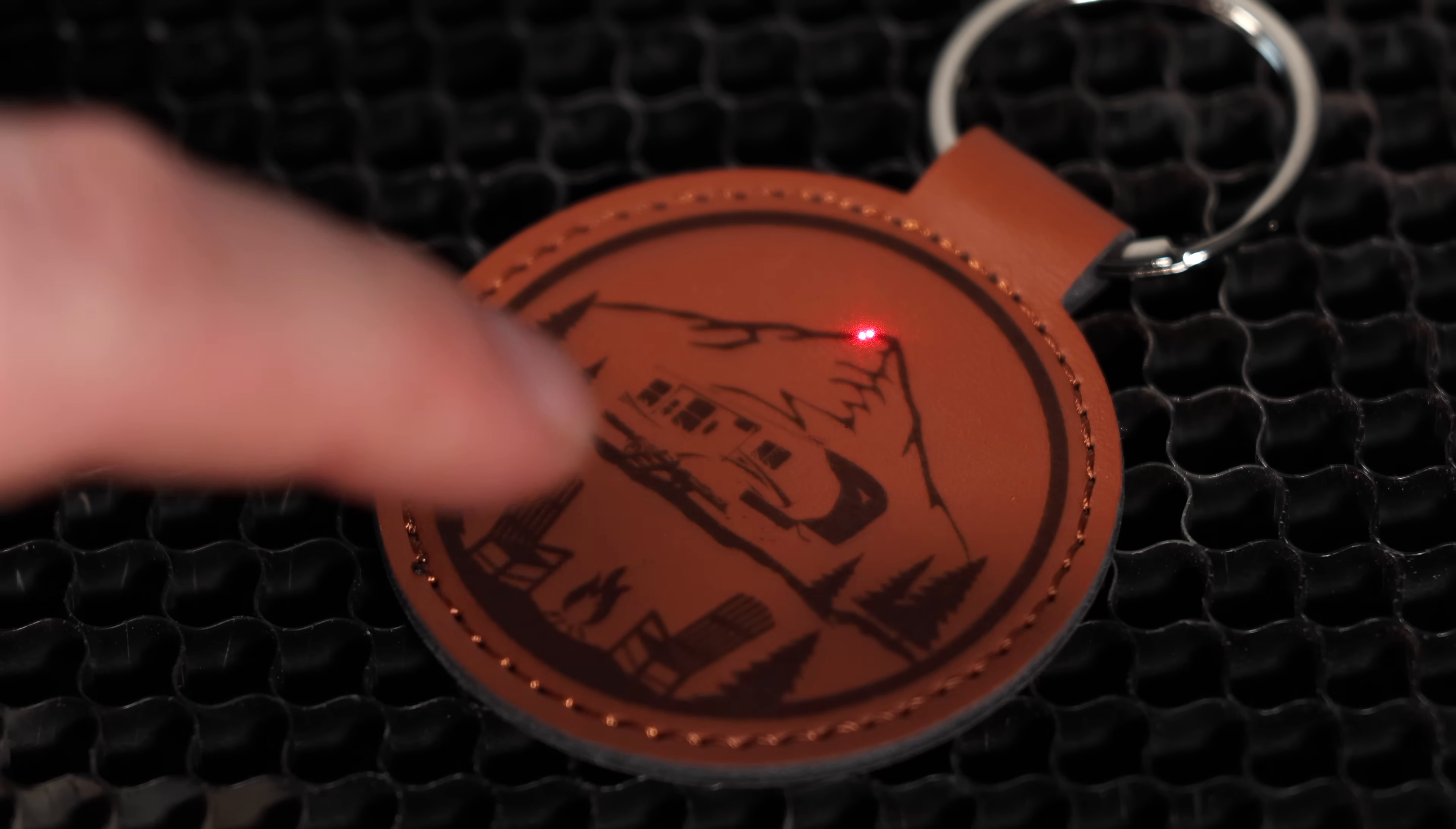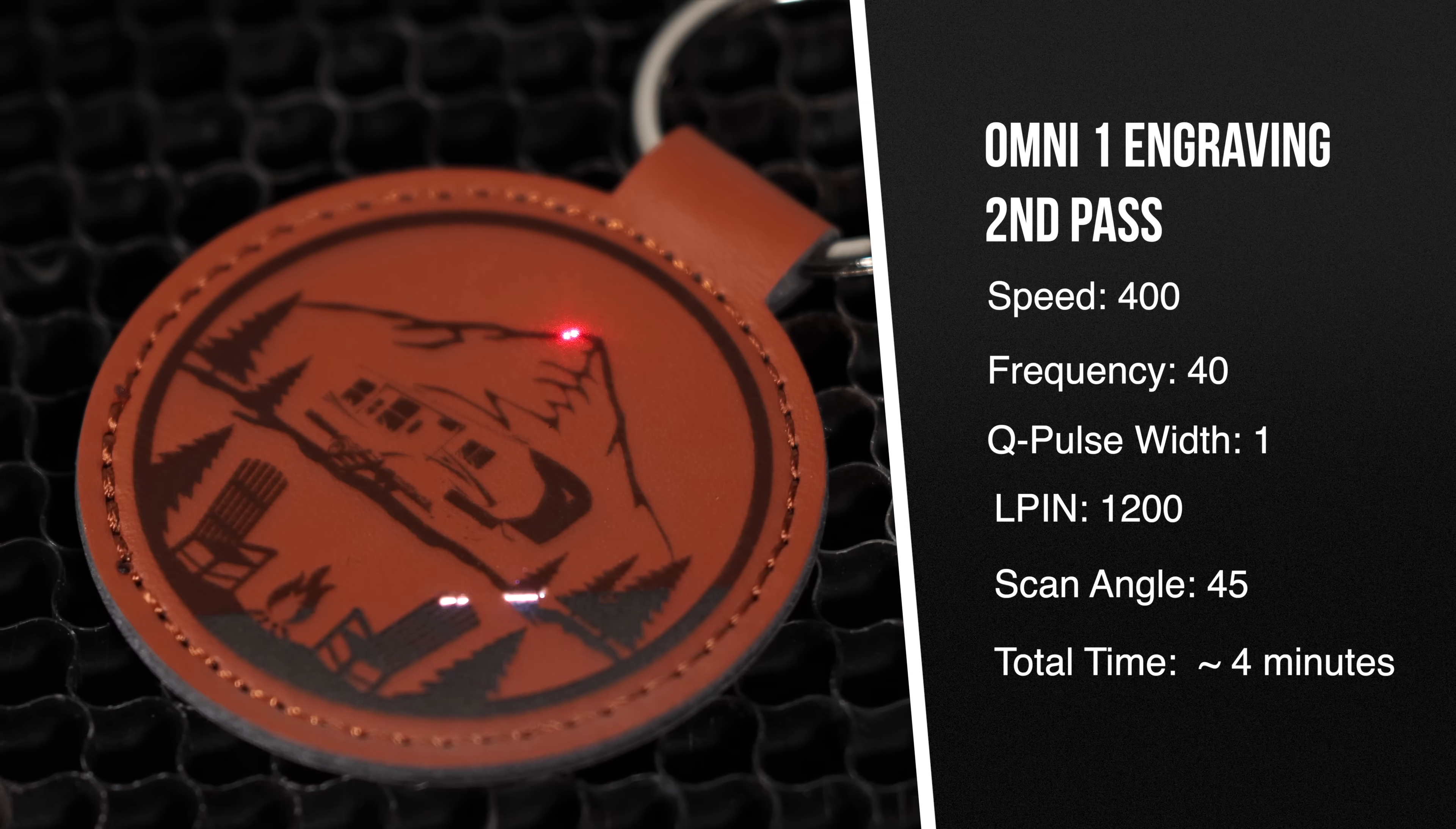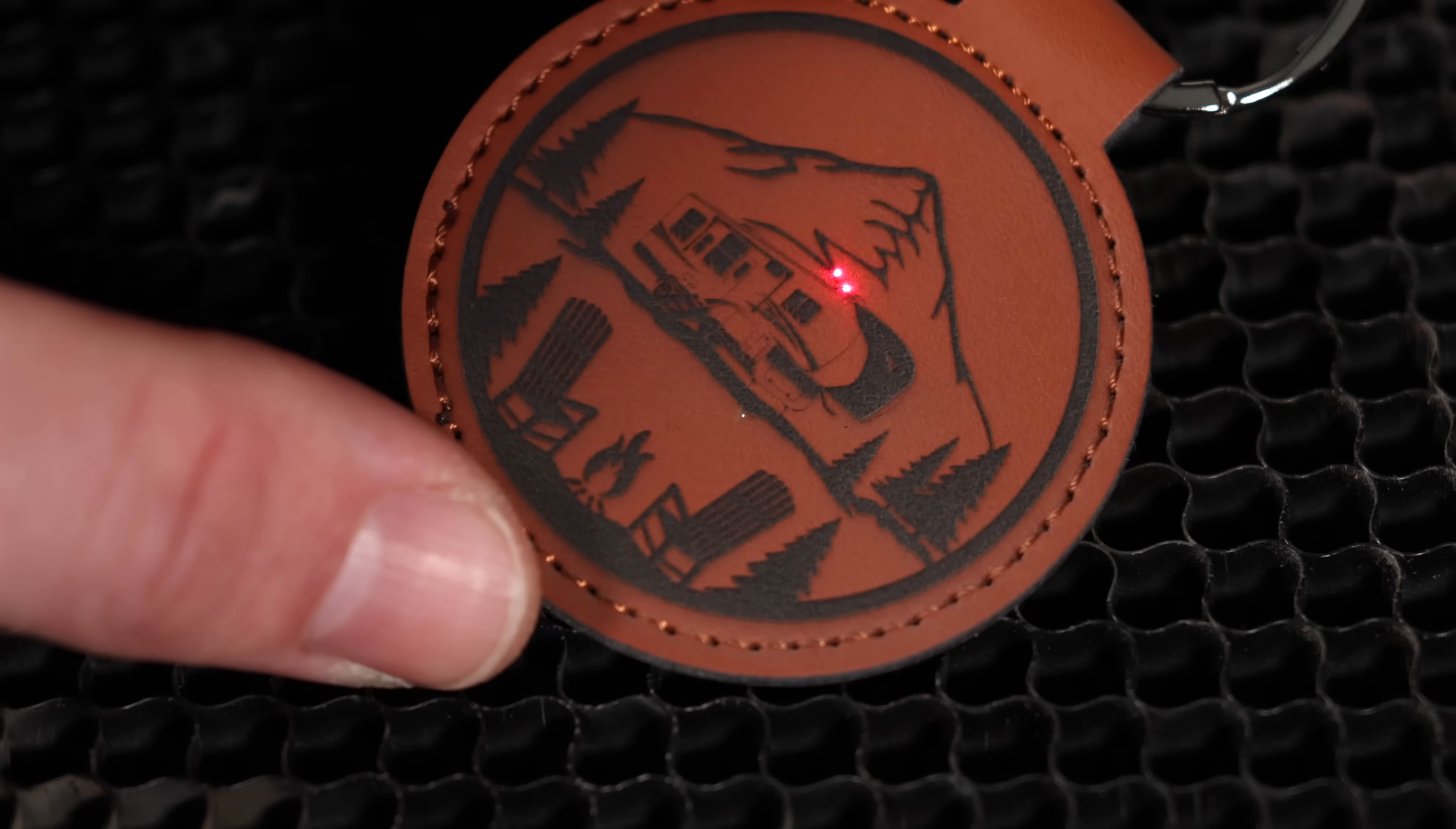Also, we had our speed a bit too high for this amount of detail, so some areas were missing. We dropped it down and tried again. The second pass filled in those missing areas and created a darker, deeper engraving. We really like the finished darker result, but next time we will most likely reduce the speed on the first pass and increase the pulse width, and that will help keep some of that leather texture and prevent the engraving from going too deep.